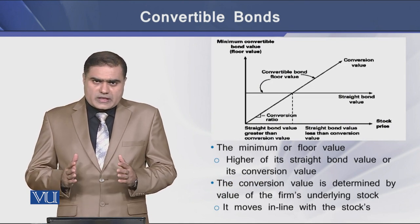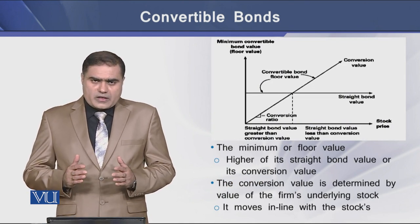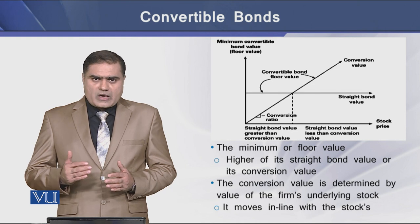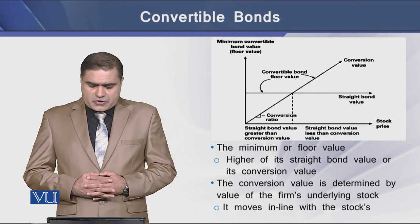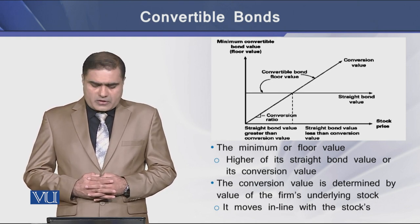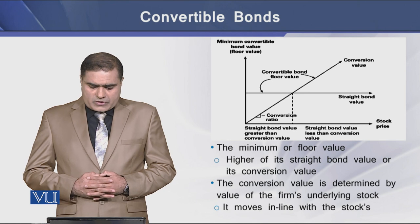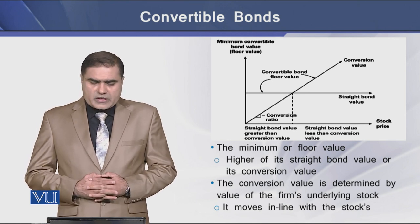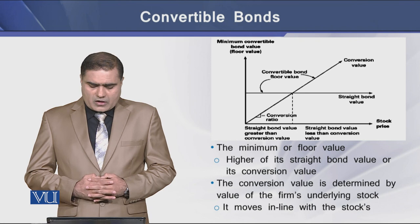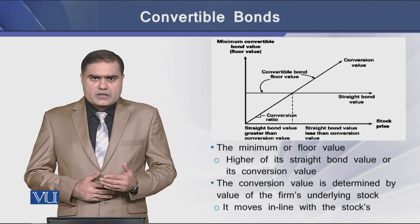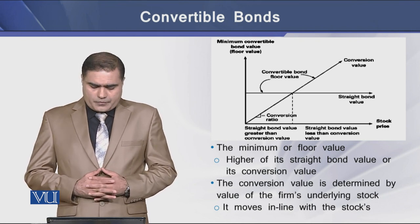In the diagram, the vertical upward sloping line shows the value of the convertible bond. The minimum or floor value on this bond is the higher of its straight bond value or its conversion value.